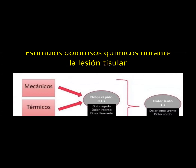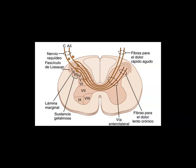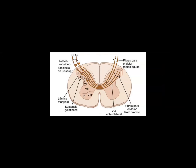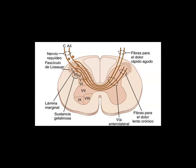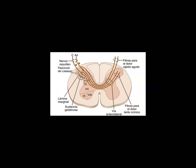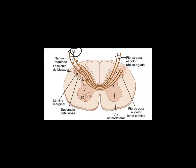Las fibras periféricas para el dolor se diferencian en rápidas y lentas. Las fibras tipo A-delta tienen una velocidad entre 6 y 30 metros por segundo y llevan la estimulación del dolor rápido. El dolor rápido se transmite a través de las fibras A-delta.